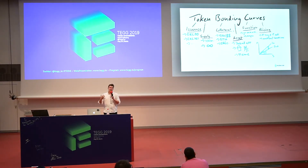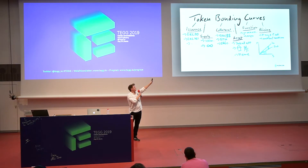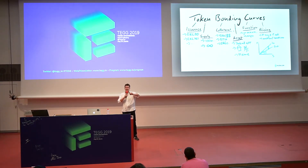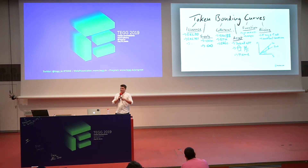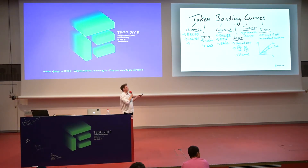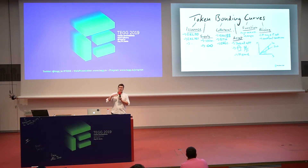Bonding curves are really just programs and we can program them in whatever way we want. We can change the issuance — for example issuing NFTs like artworks autonomously through a bonding curve. We can change the token supply, make capped token issuance, have different stages of a sale, and use different forms of collateral — most bonding curves initially assumed using Ether as the base collateral, but we can also use Dai, stake a different asset, and use a different pricing function.